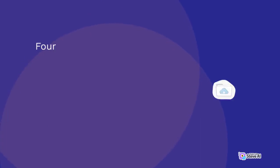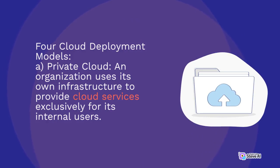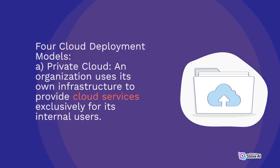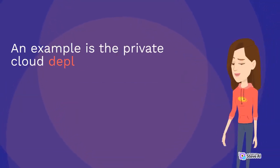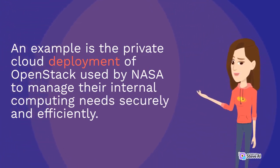For cloud deployment models — A: Private cloud. An organization uses its own infrastructure to provide cloud services exclusively for its internal users. An example is the private cloud deployment of OpenStack used by NASA to manage their internal computing needs securely and efficiently.